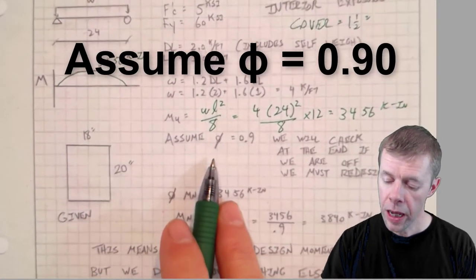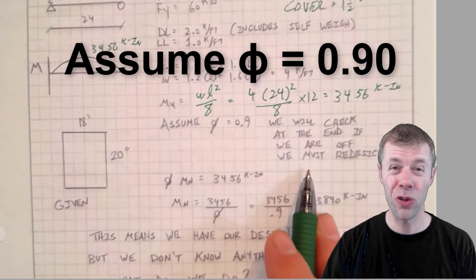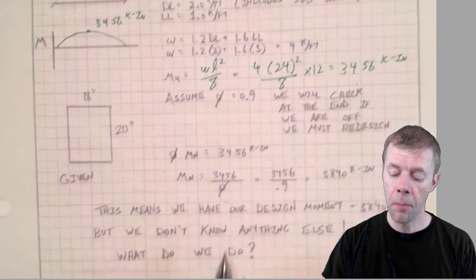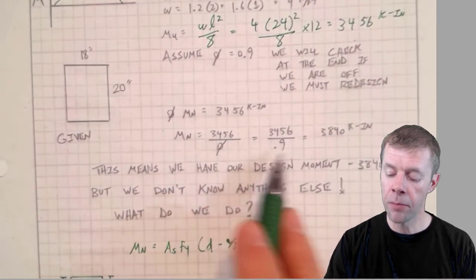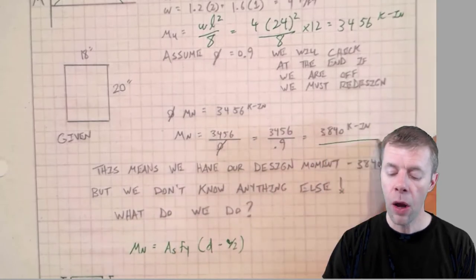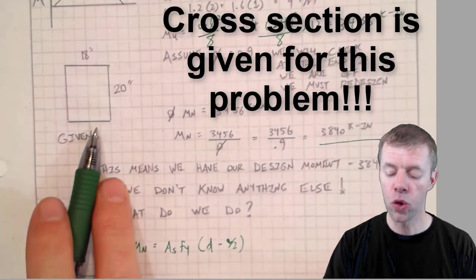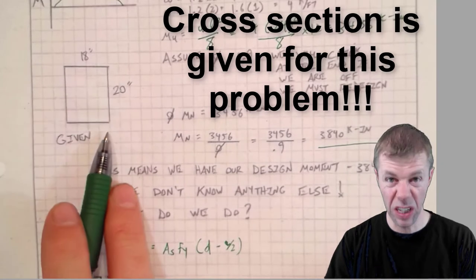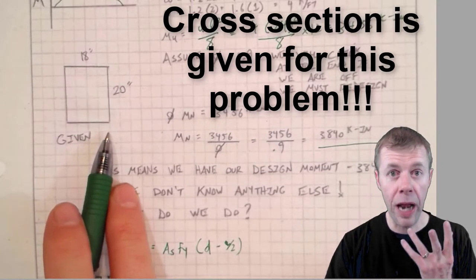I'm gonna assume my phi equals 0.9, and we're gonna check this later to make sure that it's right. So I take my moment 3,456 and divide by 0.9, and I find my moment I have to design for.